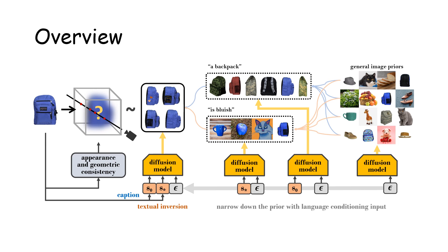The diffusion model is conditioned on the input image. We design a two-section semantic feature as the conditioning input to the diffusion model. The first section is the image caption s0, which carries the overall semantics. The second section is a text embedding s extracted from the input image with textual inversion, which captures additional visual cues. Our two-section semantic feature provides an appropriate image prior, allowing the synthesis of a realistic NeRF coherent to the input image.